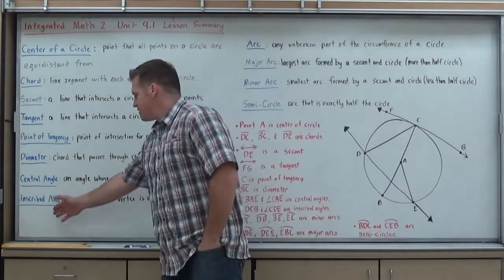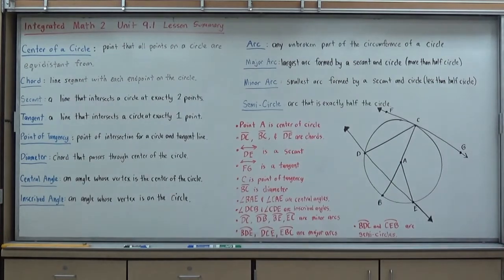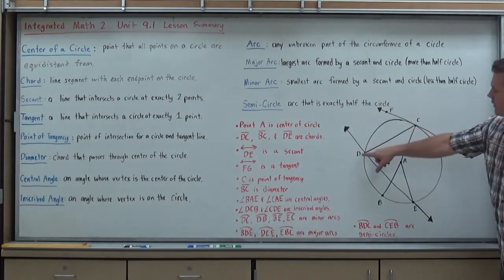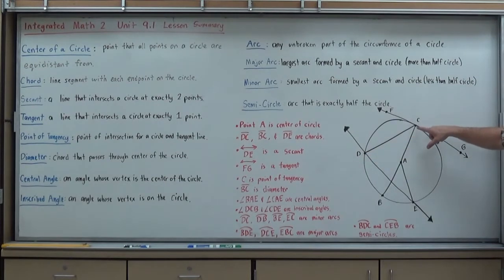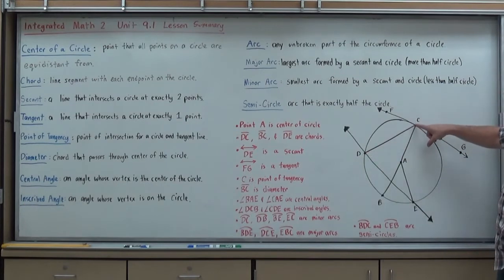We also have something called an inscribed angle, which is an angle whose vertex is on the circle. So rather than the vertex being in the center, it's on the edge. So DCB is an inscribed angle. EDC is an inscribed angle. You can see how the vertex is coming along the outside.